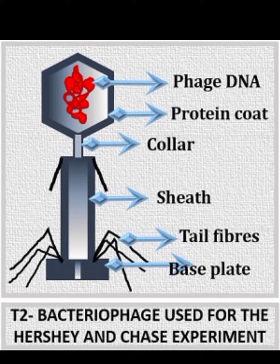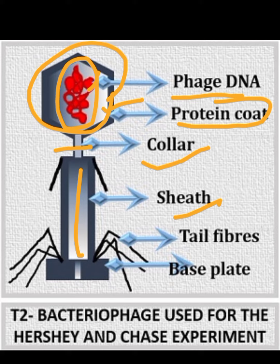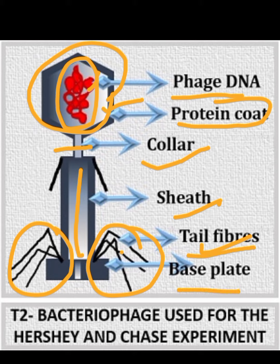In the upper side there is phage DNA, and the second part is the protein coat, which is covering it. Inside, phage DNA fills up this area. This is the neck area, you can see it is the collar — the middle area. And the tail fiber, which is the leg-like structure. You can see the base plate, which we call the base plate.